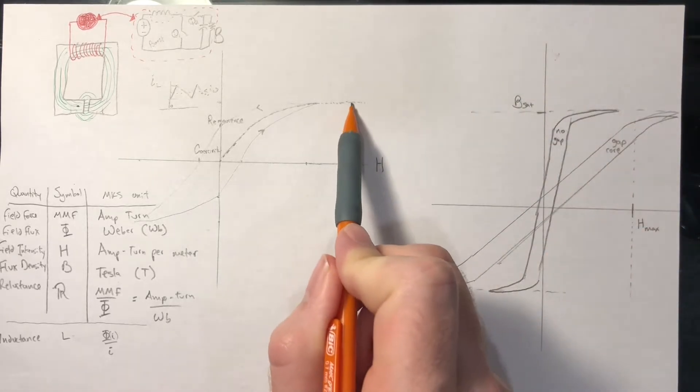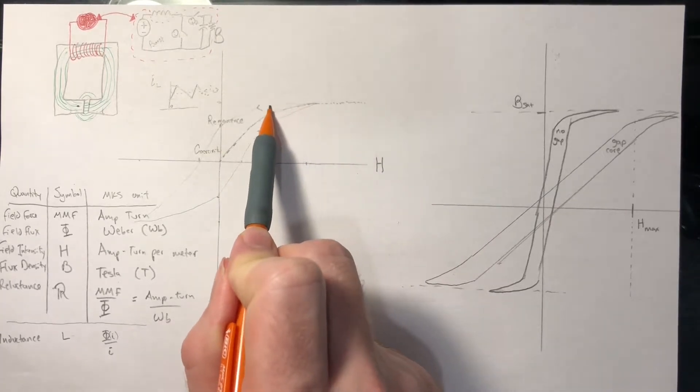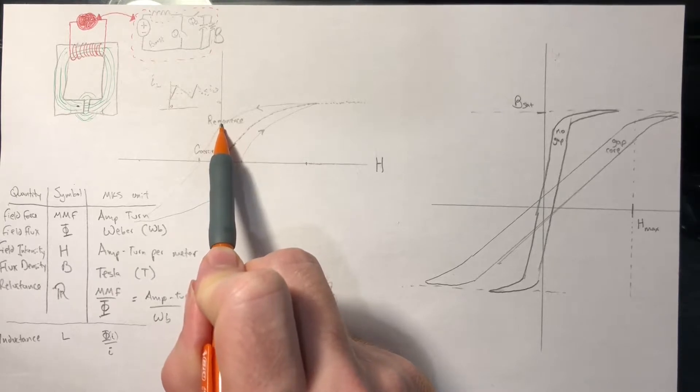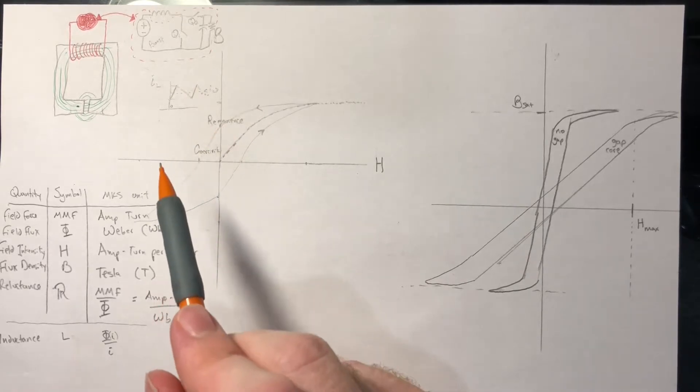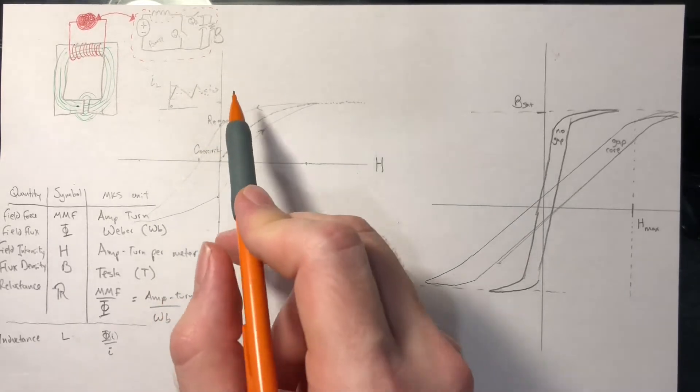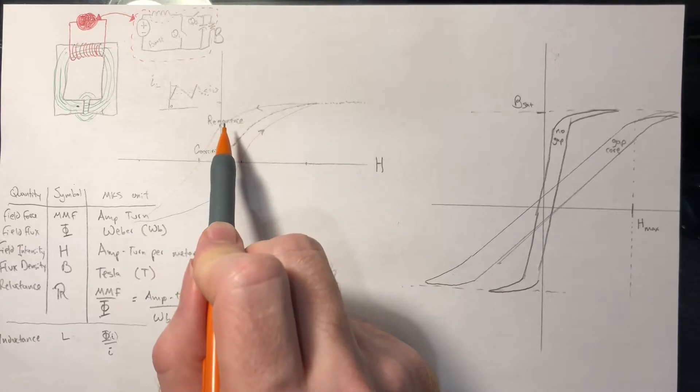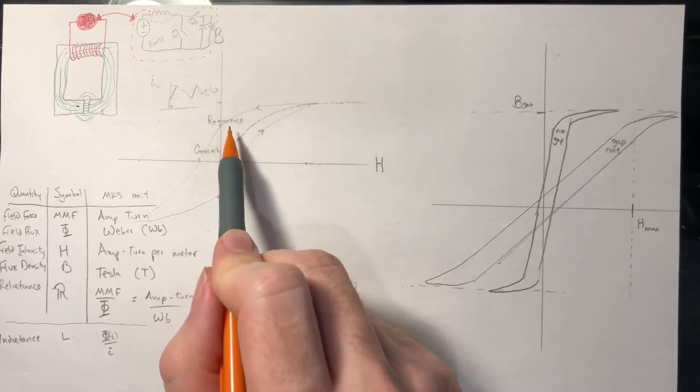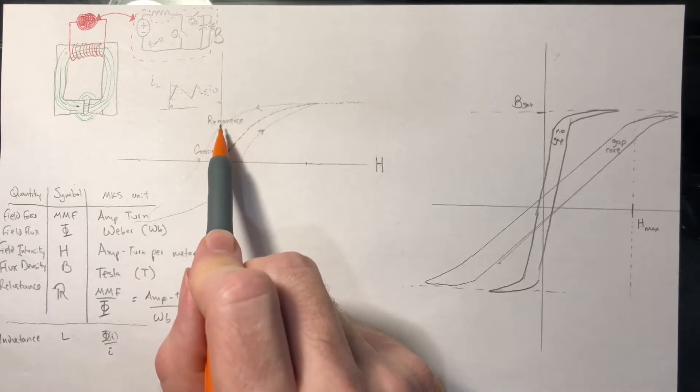Now assume we stop providing excitation to this core. So we stop putting any current through this coil around the winding. We see that even when we're not applying any current to these coils, there's still some magnetism left. That's how permanent magnets are made. The amount of B that remains is called the remnants of that material. For a permanent magnet, you would want high remnants because you want it to stick onto your fridge without having to put a battery and some coils up to it.